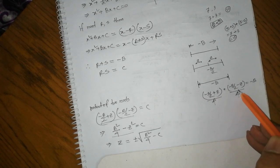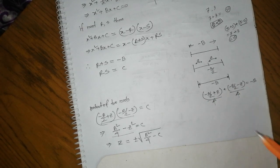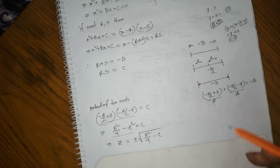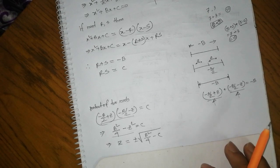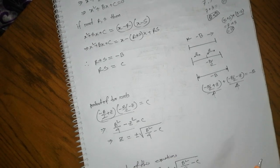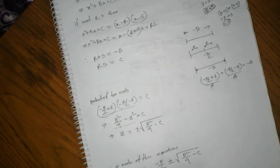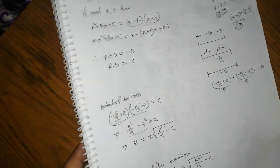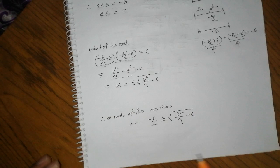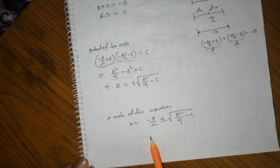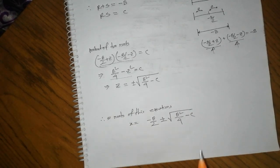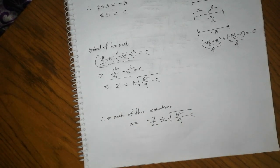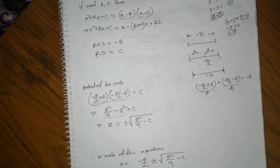Minus b by 2 minus z. I think the rule of this equation is minus b by 2 plus minus root of b by 4 minus c. So this is the equation of Mr. Potion.